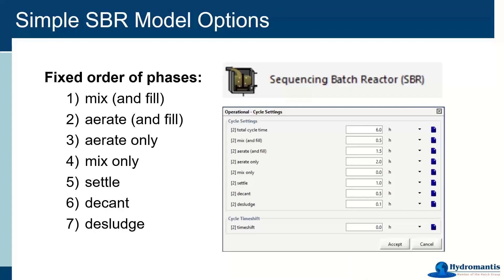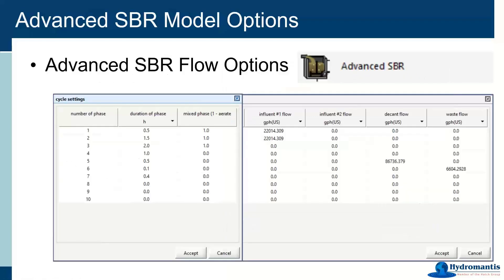The two I'm going to cover today are the simple and the advanced SBR. For simple SBR operations — called 'sequencing batch reactor' in the unit process table — there's a fixed order of phases: mixing and filling, aerating and filling, aerate only, mix only, settling, decant, and desludge. You can set whatever length of time you need, and setting a phase duration to zero skips that phase.